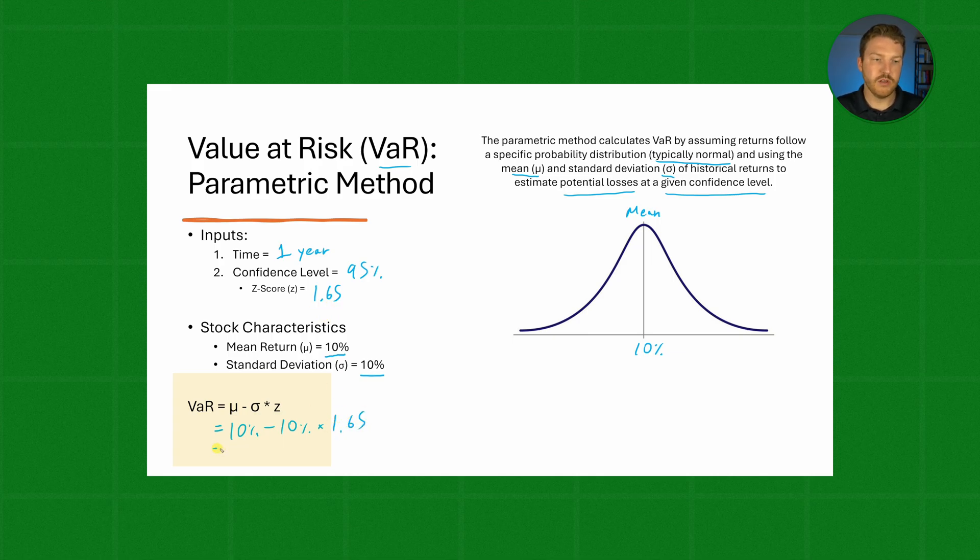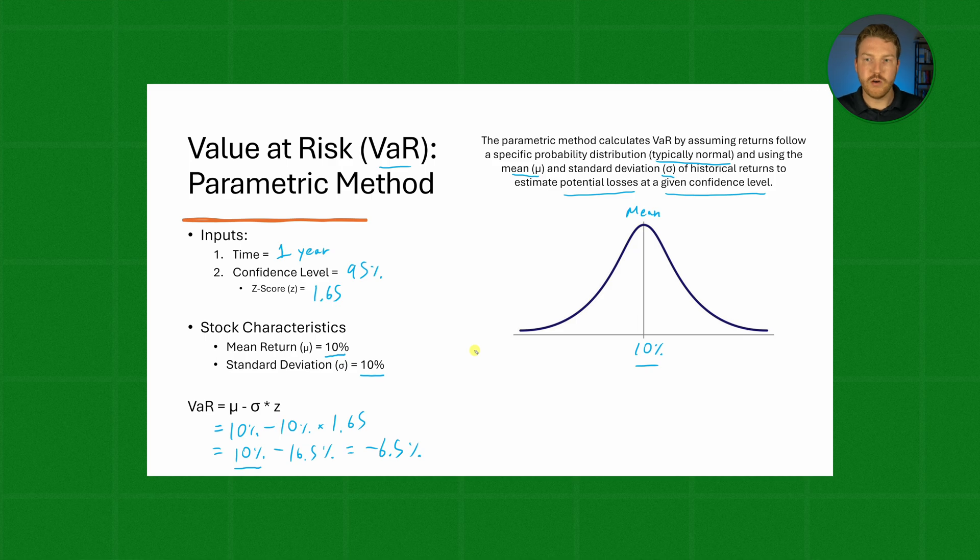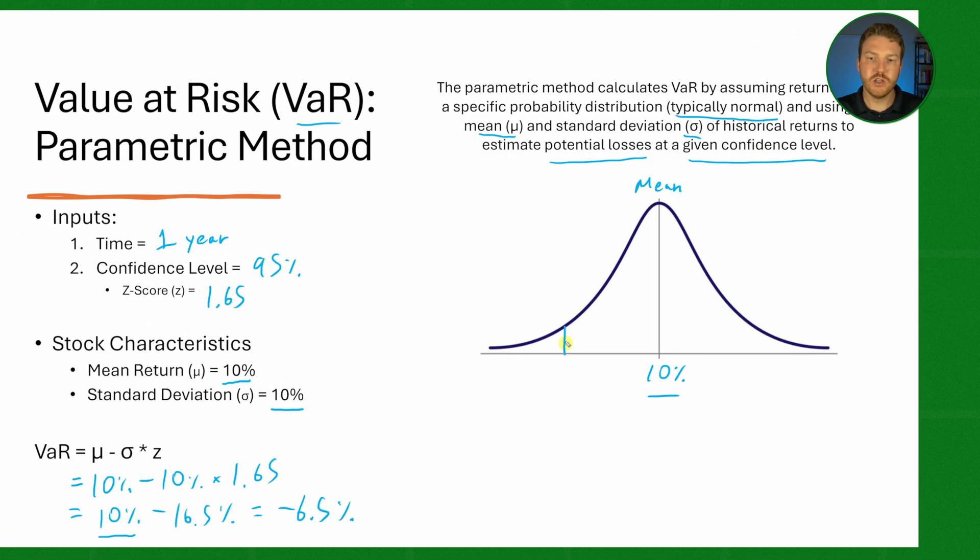So if we solve for this we'll find that our VaR is 10% minus 16.5%, which gives us a value of negative 6.5%. So let's think about for a second what that means. We expect a return of 10% right here, but we're looking at our fifth percentile worst outcome, which would actually end up somewhere over here, which ends up giving us a return of negative 6.5%. So this is our value at risk at this 95% confidence level.